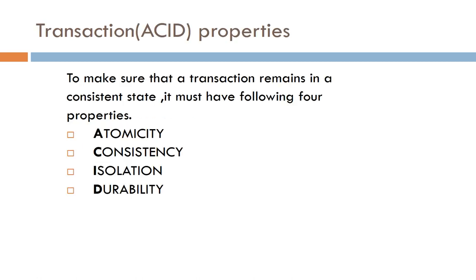First of all, Transaction Properties — these are also known as ACID Properties, named from the first letters of four different properties. To ensure a transaction remains in a consistent state, it must have the following four properties: Atomicity, Consistency, Isolation, and Durability.